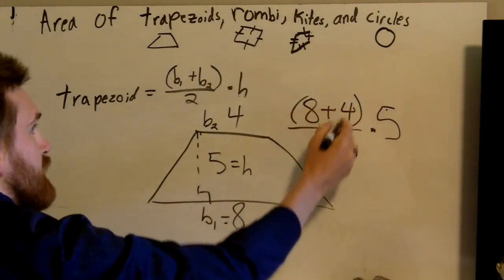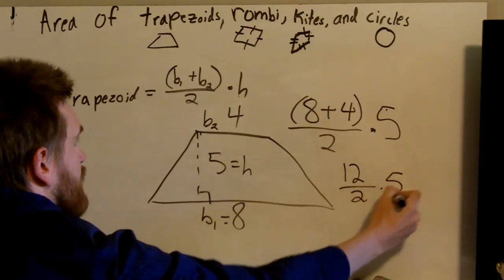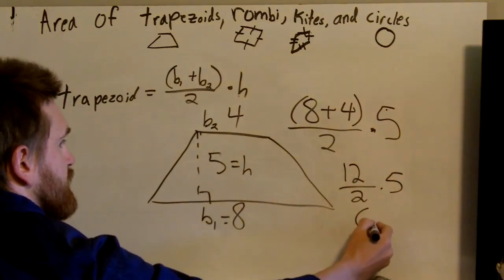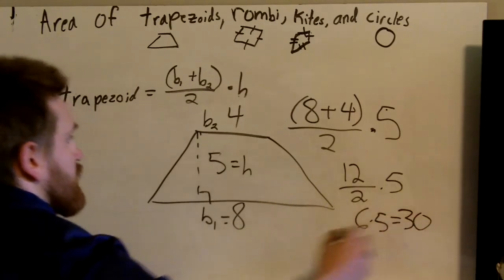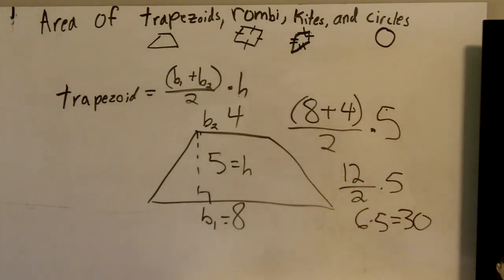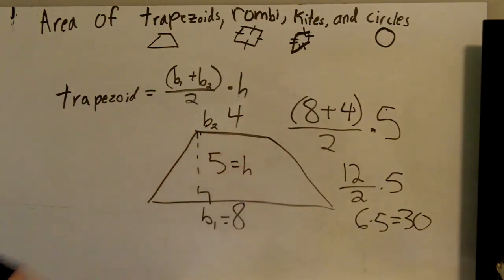We want to do eight plus four is twelve divided by two times five. So twelve divided by two is six times five equals thirty. So that's what we do. We add those together, divide it by two, and then multiply it by our height.